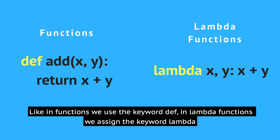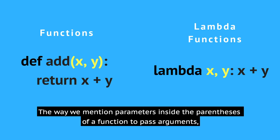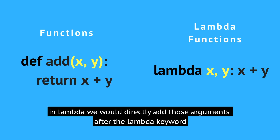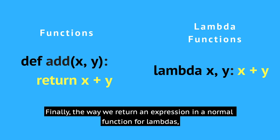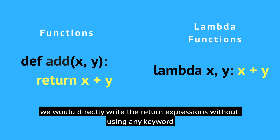Like in functions we use the keyword def, in lambda functions we use the keyword lambda. The way we mention parameters inside the parenthesis of a function to pass arguments, in lambda we would directly add those arguments after the lambda keyword. The way we return an expression in a normal function, for lambdas we would directly write the return expression without using any keyword.